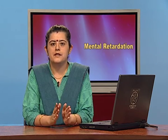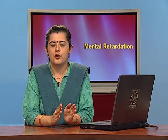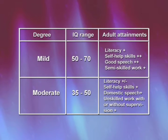Welcome students. Let us cover the various types and categories of mental retardation. The first category is mild mental retardation, which ranges from an IQ of 50 to 70.